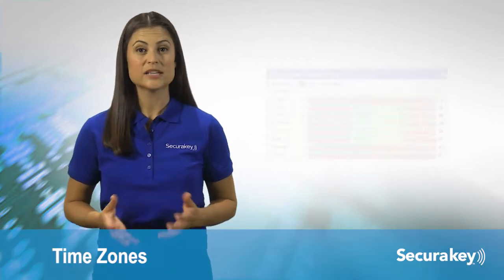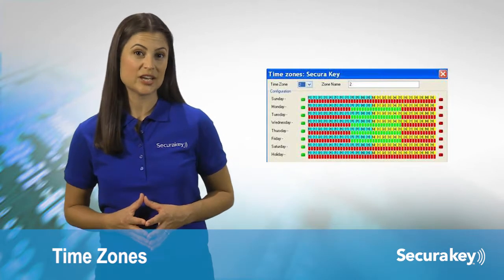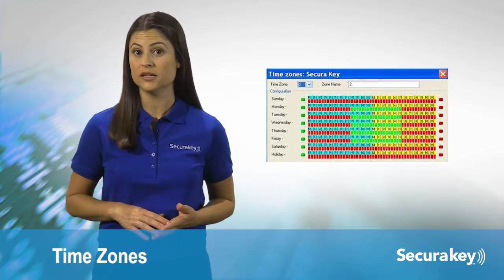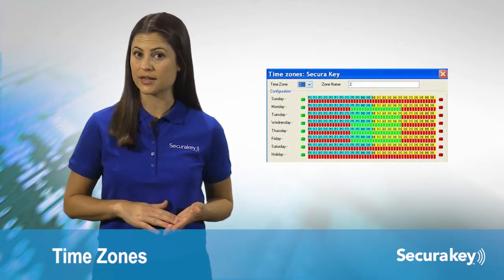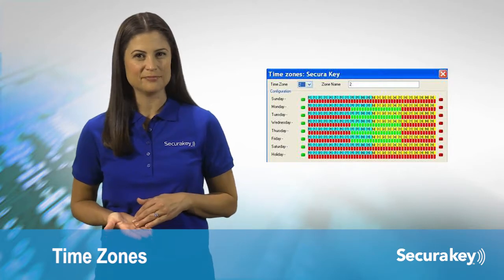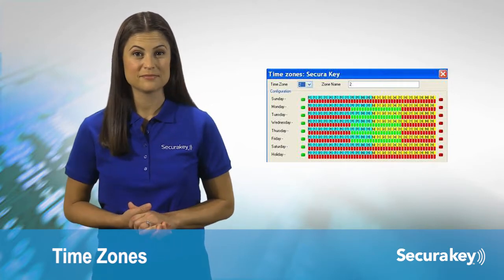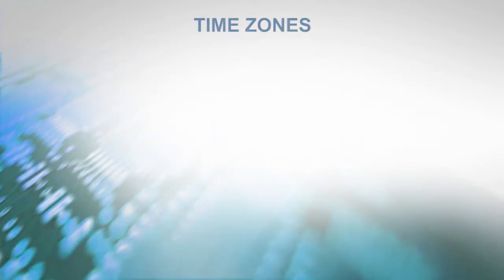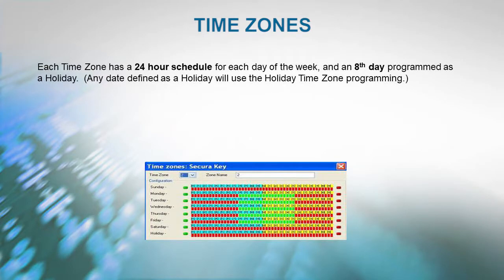A time zone is a schedule that governs when a card is valid or allowed access, and when it is invalid or denied access. Each time zone has a 24-hour schedule for each day of the week, as well as an 8th day programmed as a holiday. Any date defined as a holiday will use the holiday time zone programming instead of the normal weekday programming.